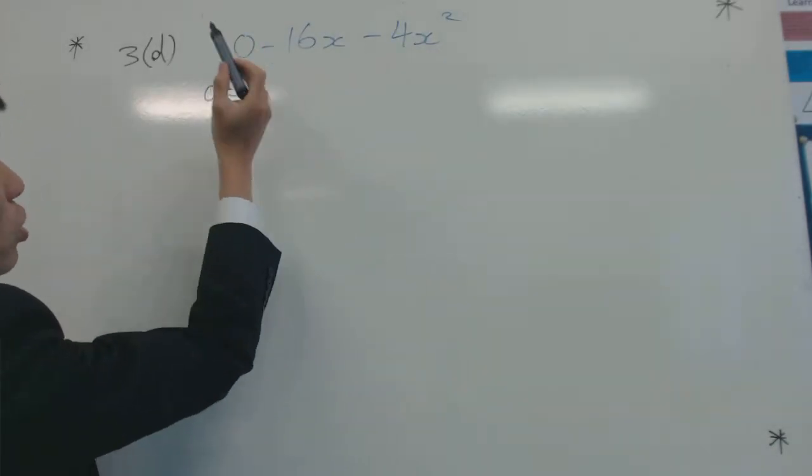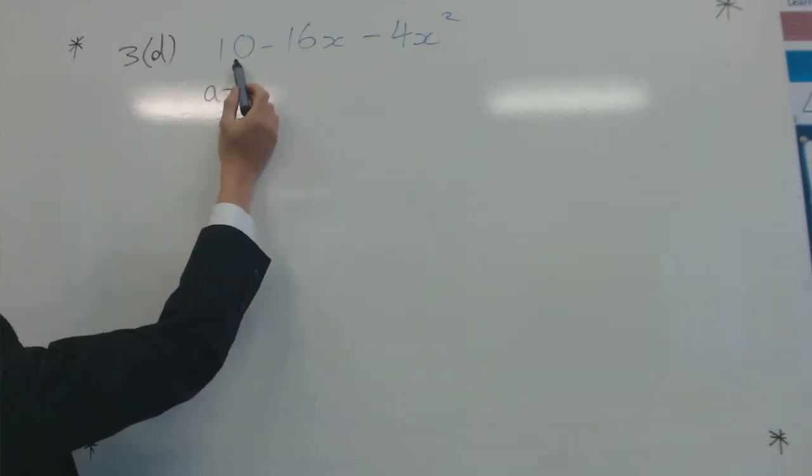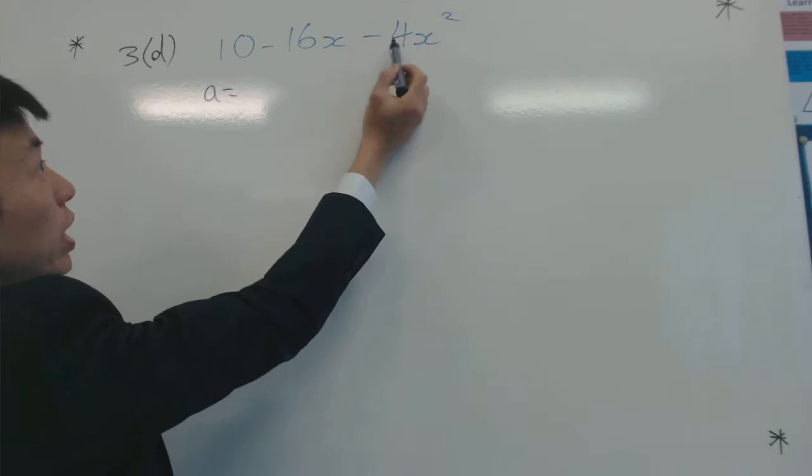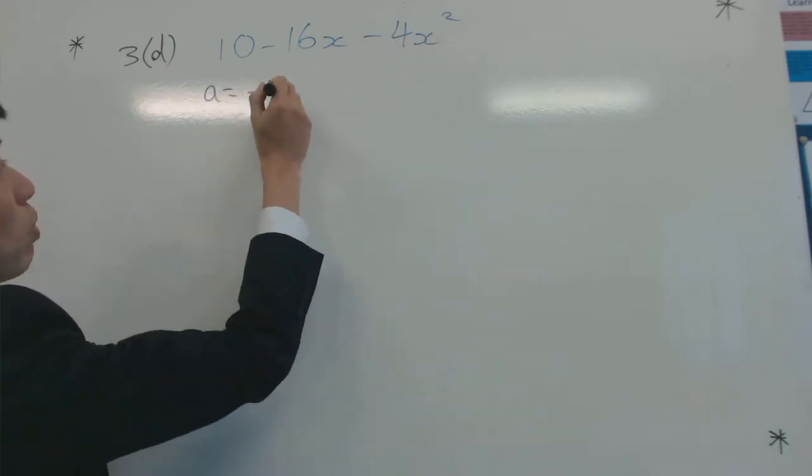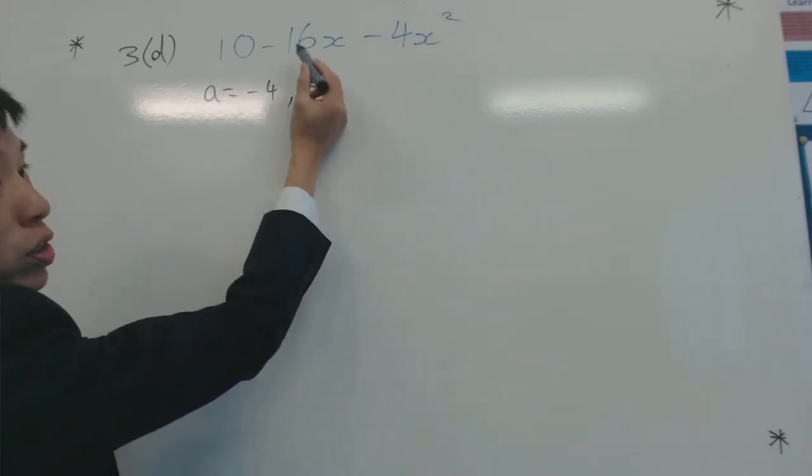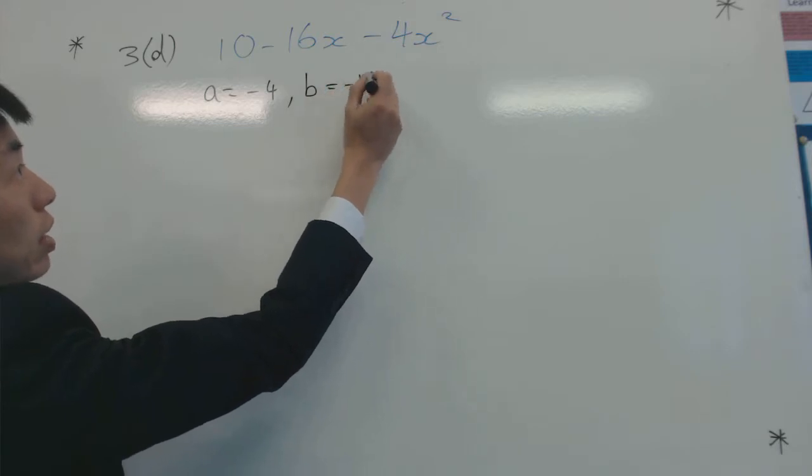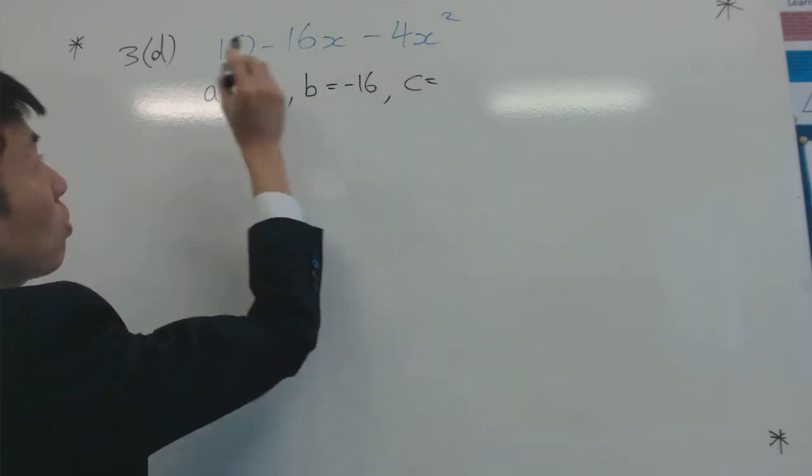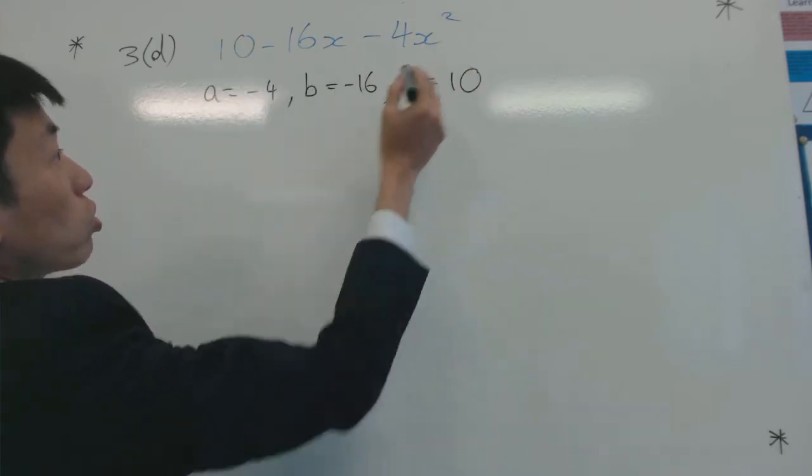a equals - remember it's not the number at the start of the expression, it's the coefficient of x squared - so it's minus 4. b is the coefficient of x, which is minus 16, and c is equal to a positive 10, that constant, which is also the y-intercept.